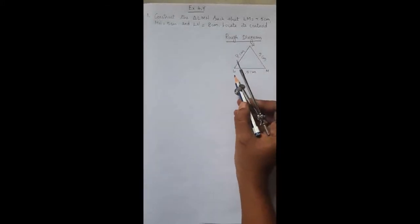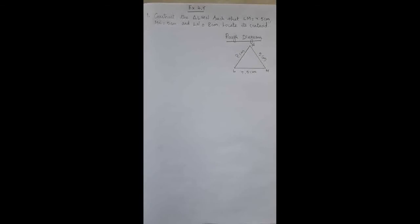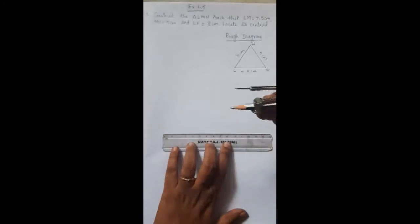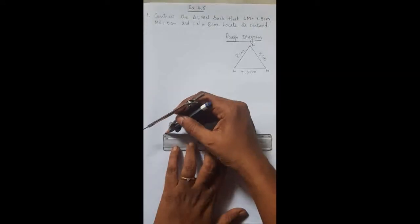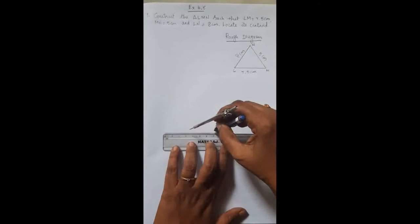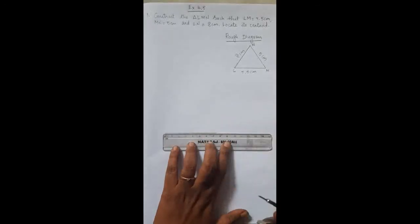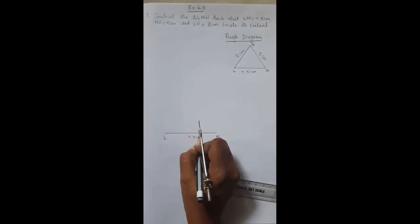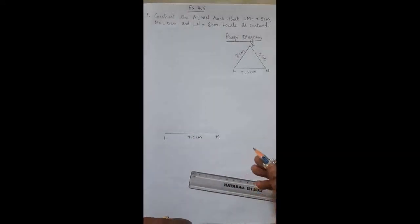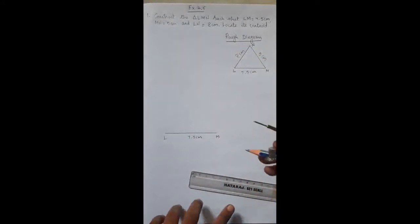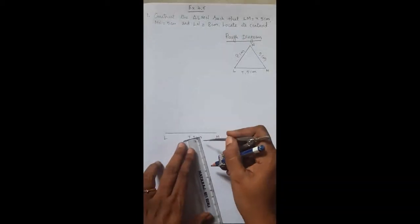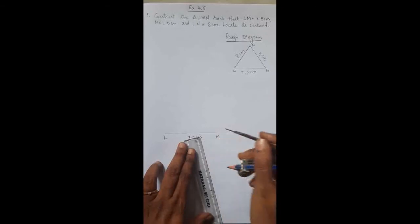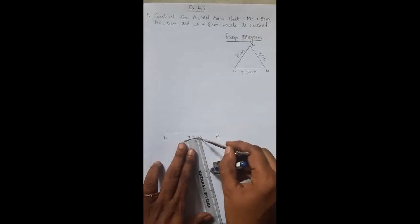First, draw the base LM equal to 7.5 cm. Take the scale and mark from zero to 7.5 cm. This line segment LM is drawn for 7.5 cm. Then, for MN equal to 5 cm, take the compass and measure 5 cm.